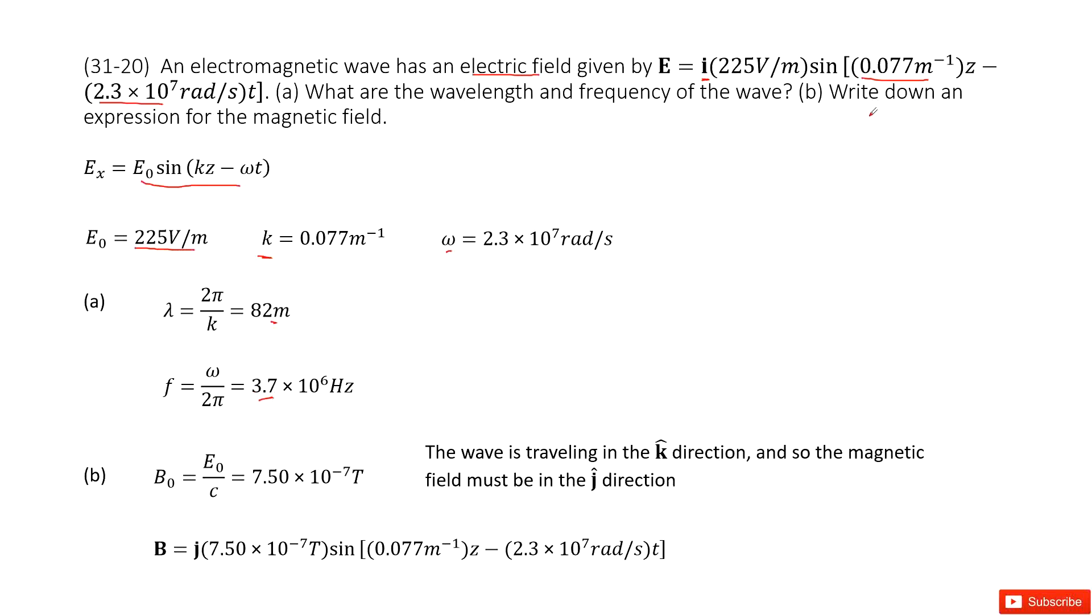Second part: write down an expression for the magnetic field. Now we need to look at the magnetic field. For magnetic field, we can see the k and omega will not change. It's still the same. So it looks like we need to find the amplitude for magnetic field, B naught. So by definition, we know B naught equals E naught divided by c. So we get the answer there.